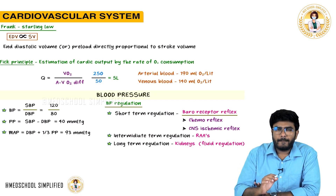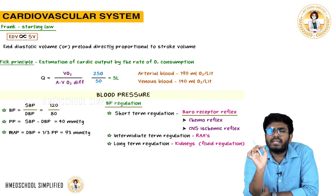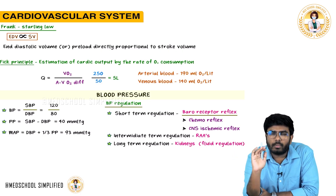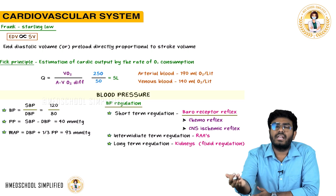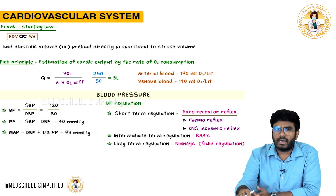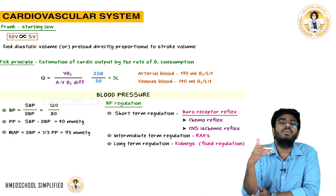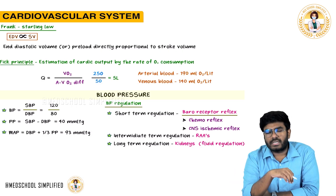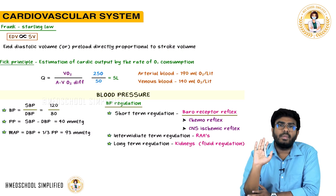In our body there are receptors called baroreceptors which are monitoring blood pressure at all times. If BP is falling, they report to the central nervous system that BP is going down and to try to increase it. If blood pressure is too high, baroreceptors signal the CNS to decrease the BP.